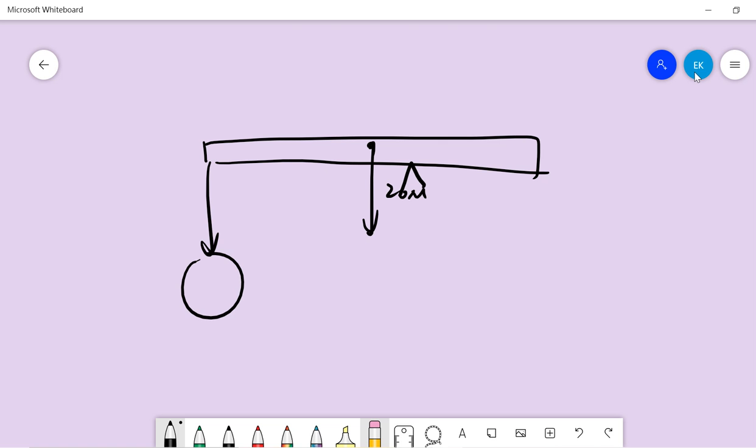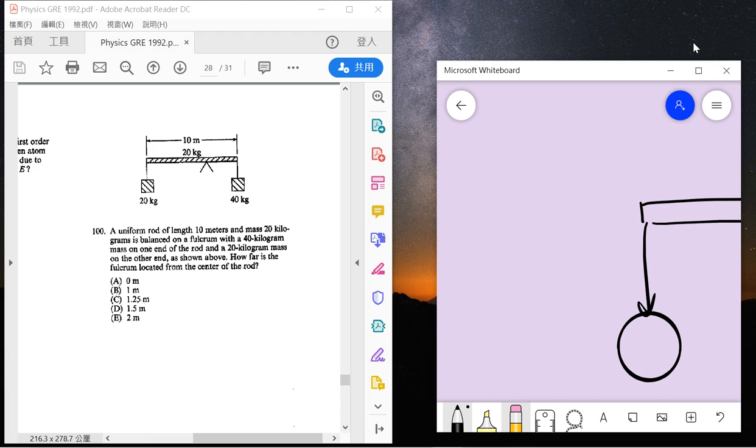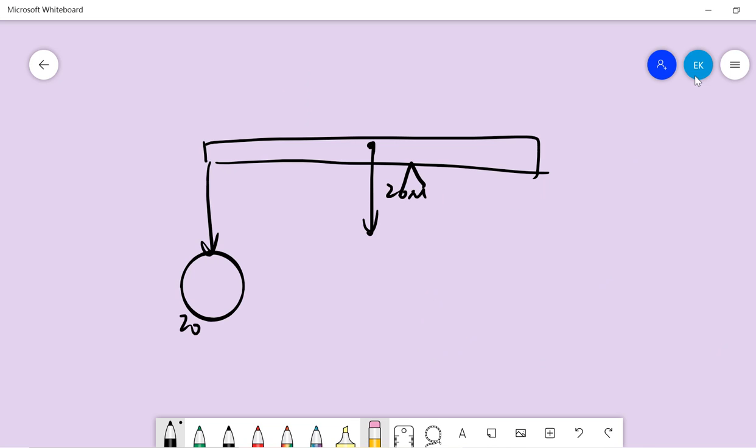This is 10 and 20 and 40. So we can assume that this is x, and this is 5 plus x, and this is 5 minus x.